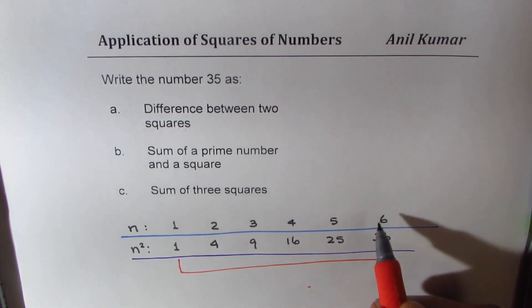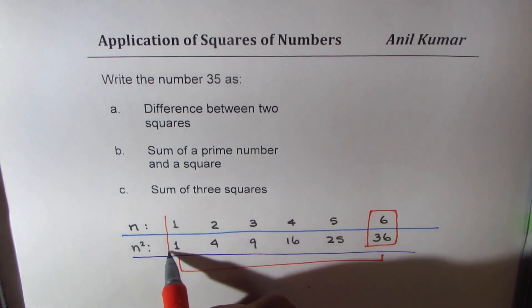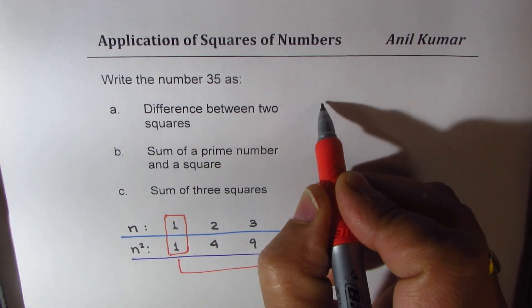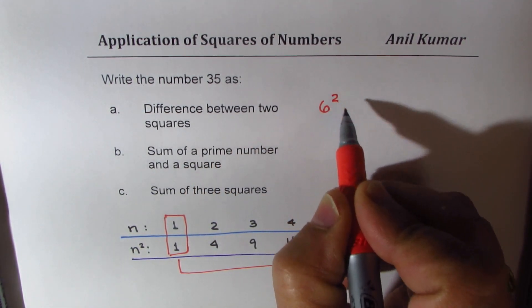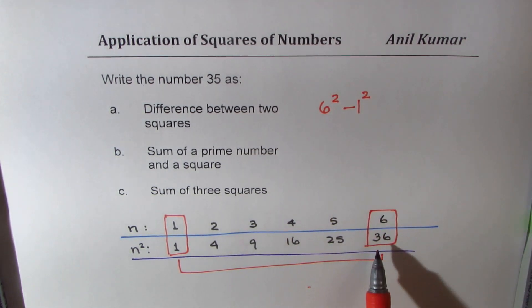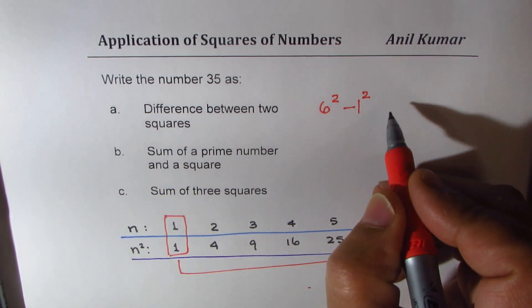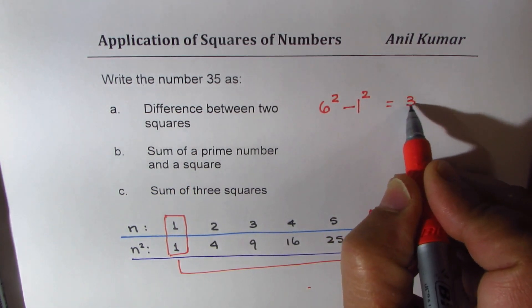The answer could be 6 square minus 1 square. So, we get the answer here as 6 square minus 1 square. 6 square is 36, and 1 square is 1, we get 35. This is equal to 35.